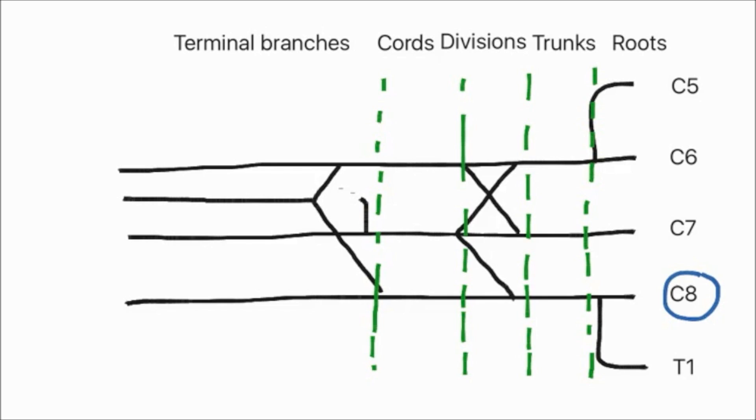These roots combine to form the three trunks. These are named the superior, middle, and inferior trunks. There's not much else to say about the trunks, so we'll move on.